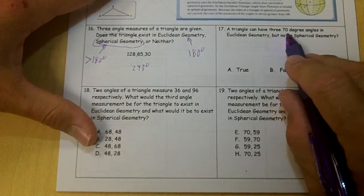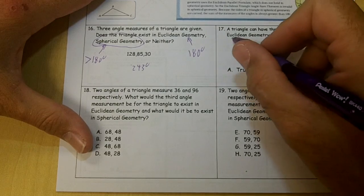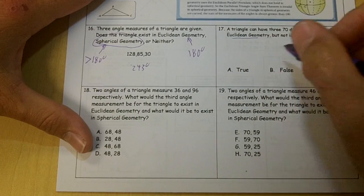A triangle can have three 70 degree angles in Euclidean, but not in spherical. That's false.